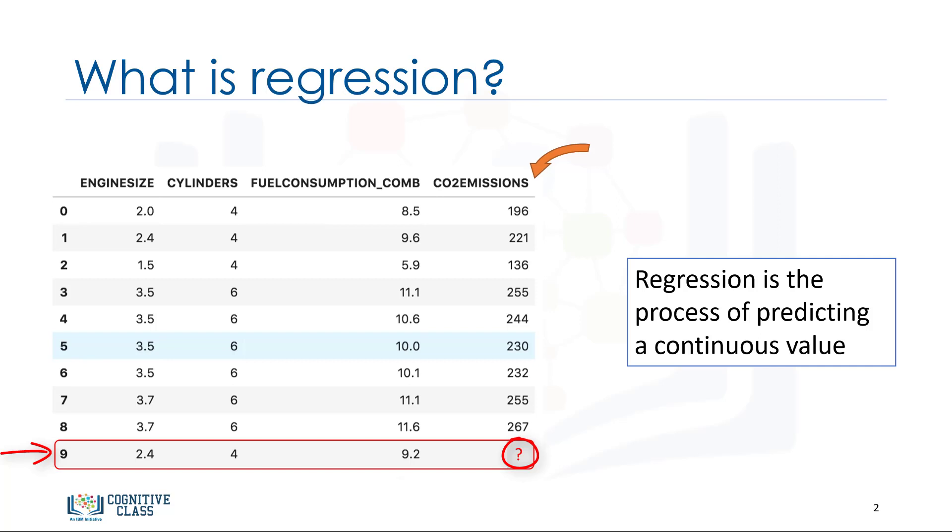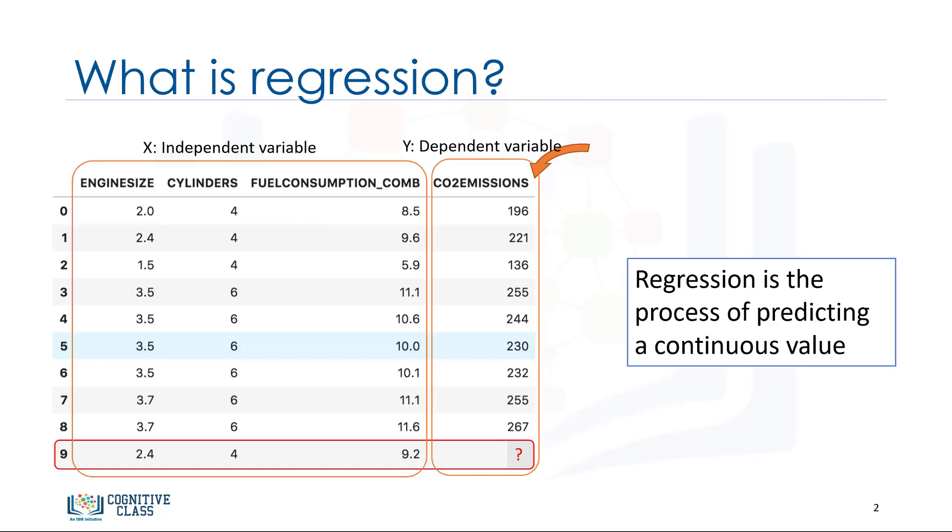Indeed, regression is the process of predicting a continuous value. In regression, there are two types of variables, a dependent variable and one or more independent variables. The dependent variable can be seen as the state, target, or final goal we study and try to predict, and the independent variables, also known as explanatory variables, can be seen as the causes of those states.